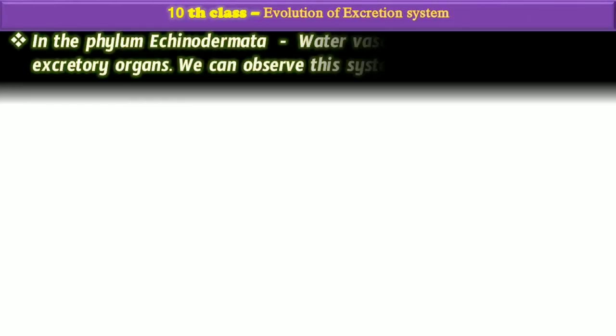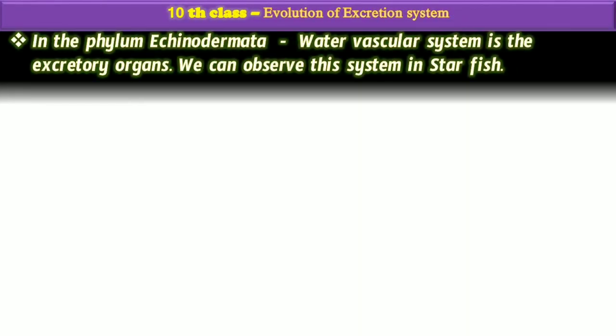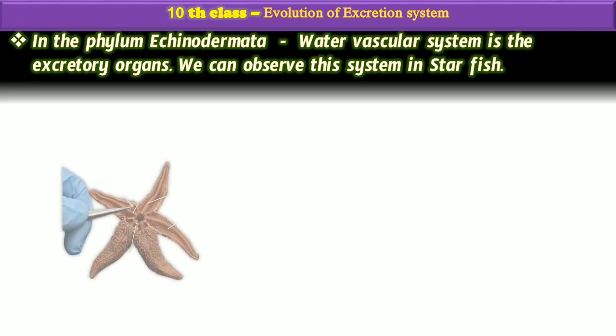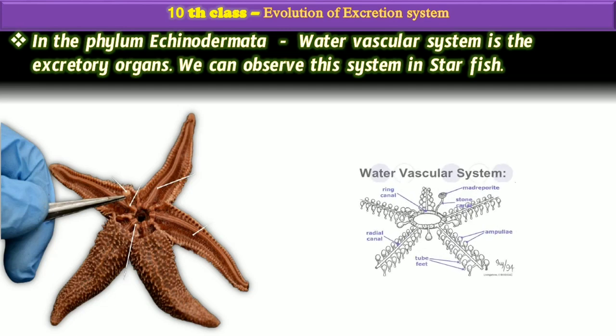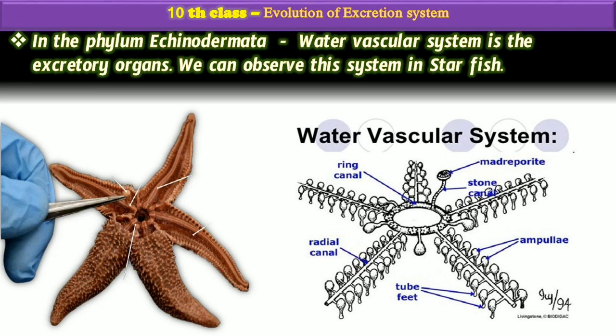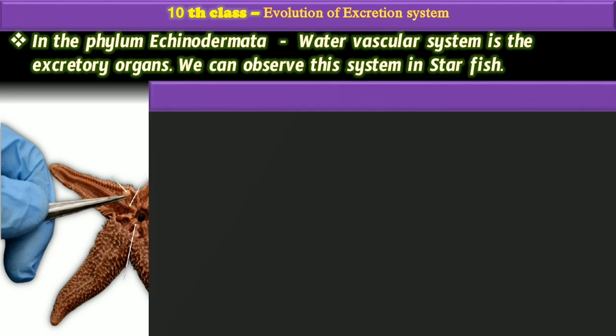In the phylum Echinodermata, they use the water vascular system as their excretory system. The water vascular system is the excretory organ in Echinodermata. We can observe this kind of system in starfish, sea urchins, and other organisms belonging to Echinodermata.